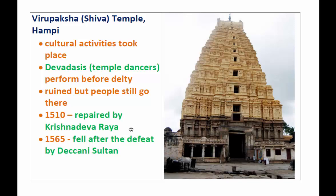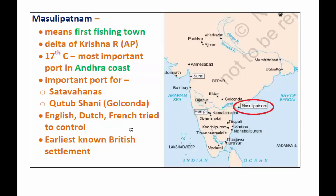Another important seaport in the medieval period was Masulipatnam. Masulipatnam means 'fishing town' — 'Masuli' means fish. It is located in the delta of the Krishna River, as you can see on this map, where this port was situated.